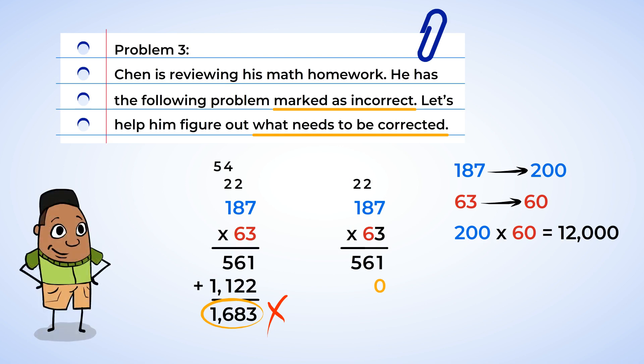Six times seven is 42, and the two stays in the tens place, and the four is carried over. Six times eight is 48, plus four is 52, and the two is placed in the hundreds place, and the five is carried over. Six times one is six, plus five is 11. And now, we can add these products together.